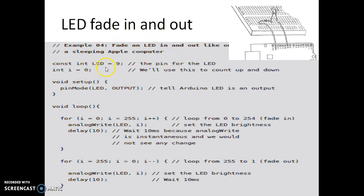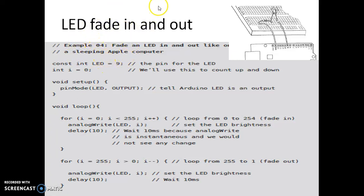The LED is connected to pin 9 here. We use a variable to count up. We are supposed to do pinMode LED comma OUTPUT. Since this is a fading example — fade out means it goes from maximum down to zero — the intensity of the LED keeps on reducing. We have an infinite loop for this, with the initial value of i equal to zero.